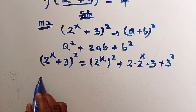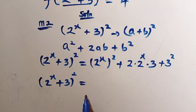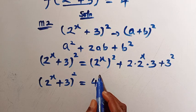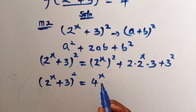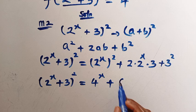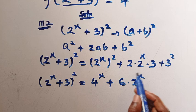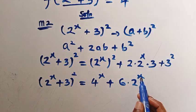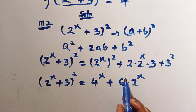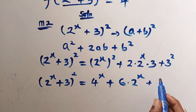So (2^x + 3)² equals 4^x — since (2^x)² = 4^x — plus 6 × 2^x plus 9. Note that we cannot simplify 6 × 2^x further because 2^x is an exponent with x as the power; we cannot express 6 as an exponent to merge the two. So we have 4^x + 6·2^x + 9.